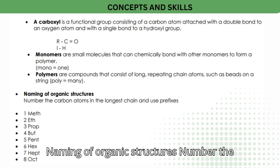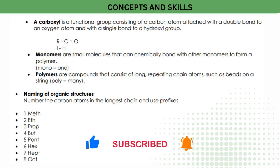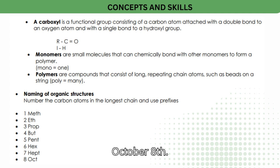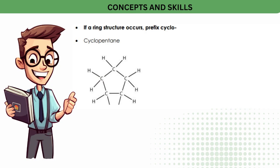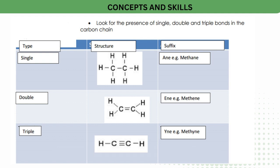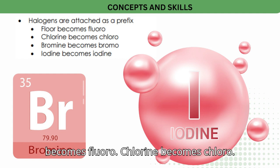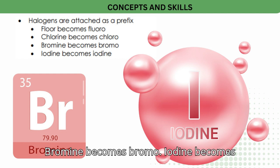Naming of organic structures: number the carbon atoms in the longest chain and use prefixes — one: meth, two: eth, three: prop, four: but, five: pent, six: hex, seven: hept, eight: oct. If a ring structure occurs, use the prefix cyclo (e.g., cyclopentane). Look for the presence of single, double, and triple bonds in the carbon chain. Halogens are attached as a prefix: fluorine becomes fluoro, chlorine becomes chloro, bromine becomes bromo, iodine becomes iodo.